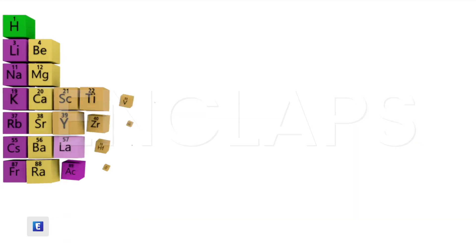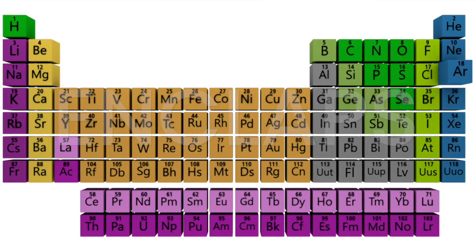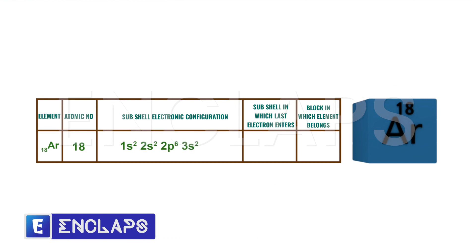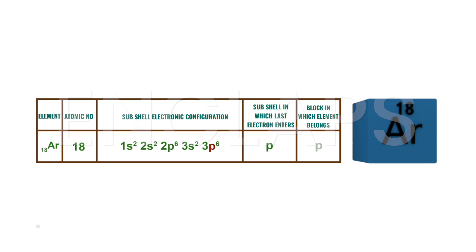Now consider the case of argon. Argon has its atomic number 18, so its electronic configuration can be written as 1s2, 2s2, 2p6, 3s2, 3p6. The last electron enters the P subshell. That means argon belongs to P block in the periodic table.